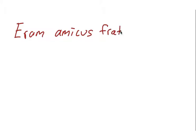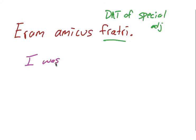Let me give some more examples in sentences. For instance, if I say eram amicus fratri, amicus here is used as an adjective and fratri is dative. So it's our dative of special adjectives. When we translate this: I was friendly to my brother.